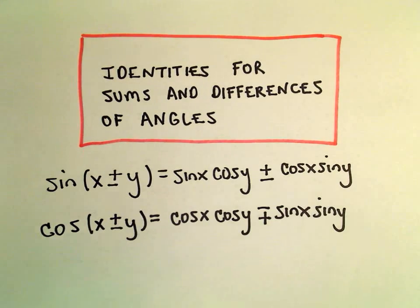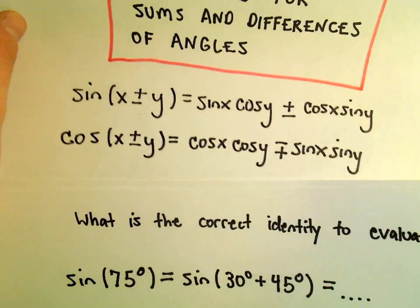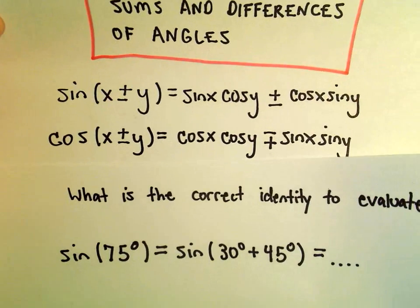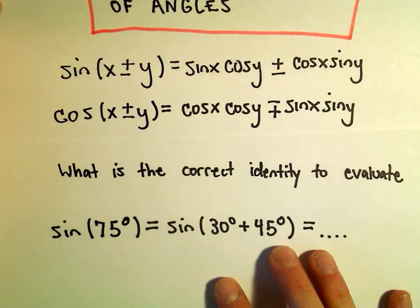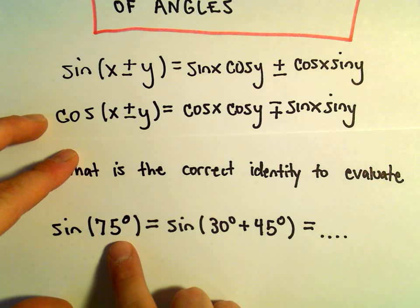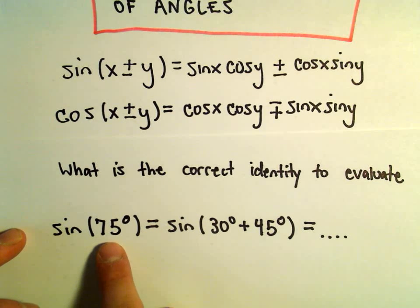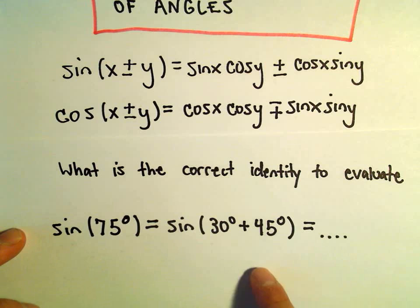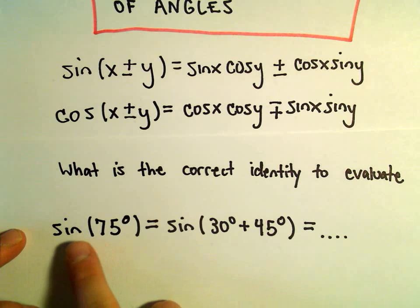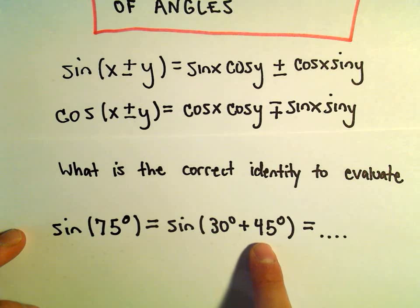So let's use these identities to evaluate a trig value here. Suppose we want to figure out the correct identity. Suppose somebody said, what is sine of 75 degrees? Well, the idea is one way to evaluate this without a calculator, at least if you know the values that go with 30 degrees, 45 degrees, 60 degrees, etc.